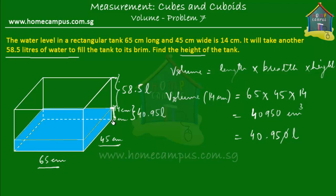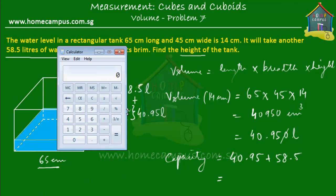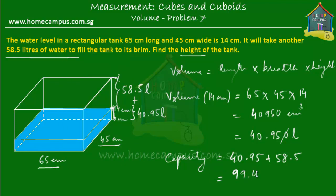Now, what can we say about the capacity of the tank? Quite obviously it is 40.95 liters plus 58.5 liters — that's the maximum amount of water the tank can hold. So the capacity of the tank is equal to 40.95 plus 58.5, which equals 99.45 liters. That's how much water it can hold when filled to the brim.